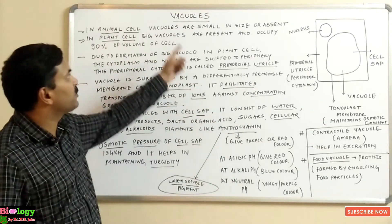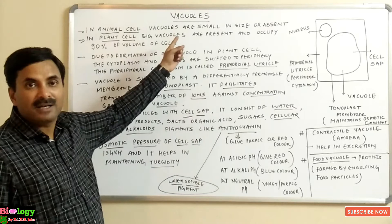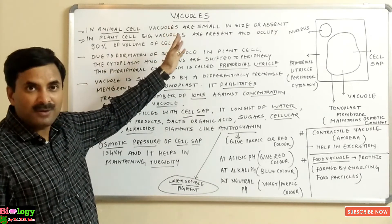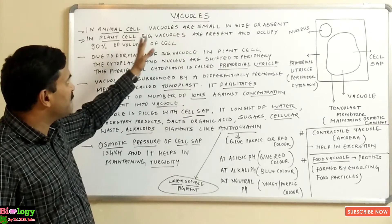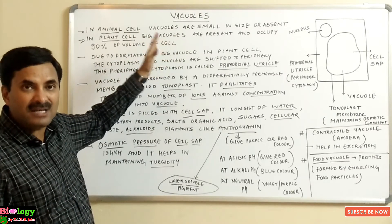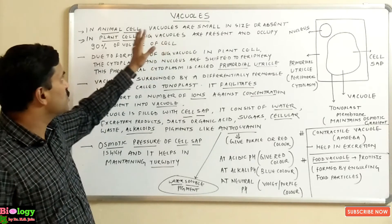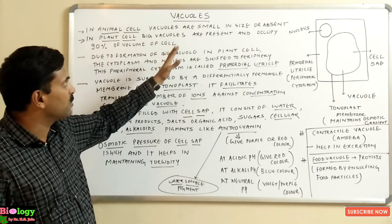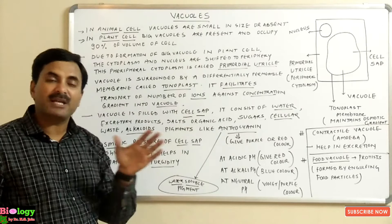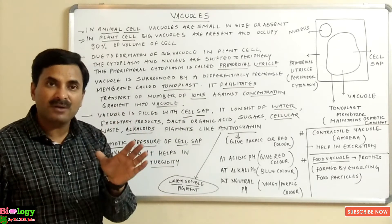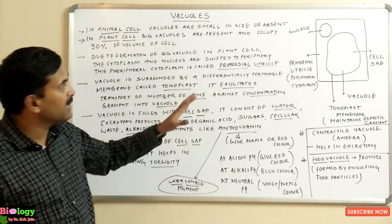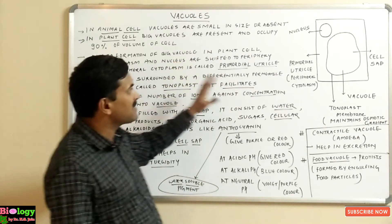Hello students, today we are going to study a topic of cell biology known as the vacuole. If we talk about vacuoles and see the animal cell and the plant cell, you will be able to see small vacuoles in the case of the animal cell. In the animal cell, the vacuoles are small or they are absent.